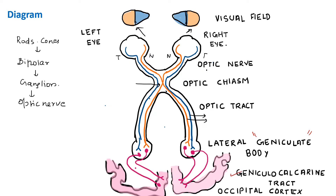This pathway is easy to remember: first the optic nerve, then the optic chiasm, then the optic tract, then the lateral geniculate body, then the geniculocalcarine tract, and finally the occipital cortex.